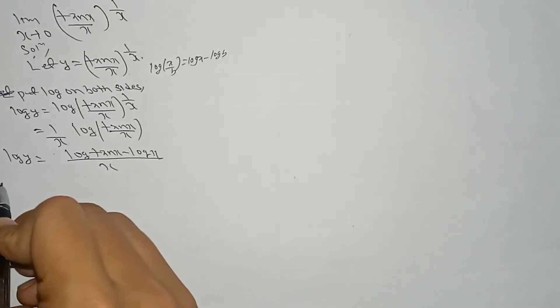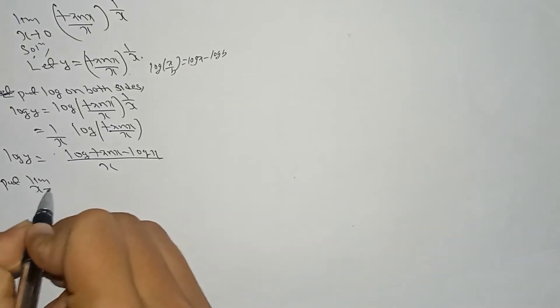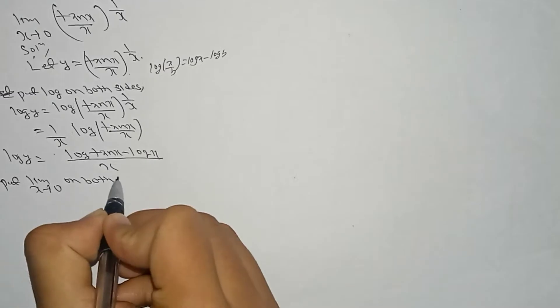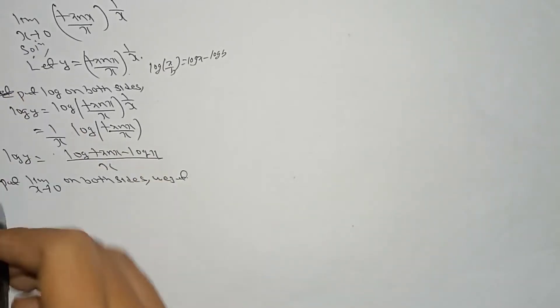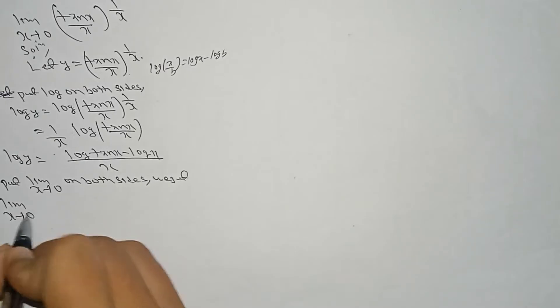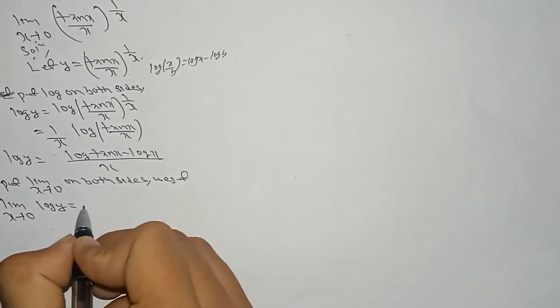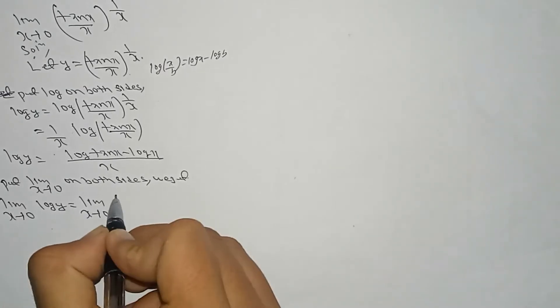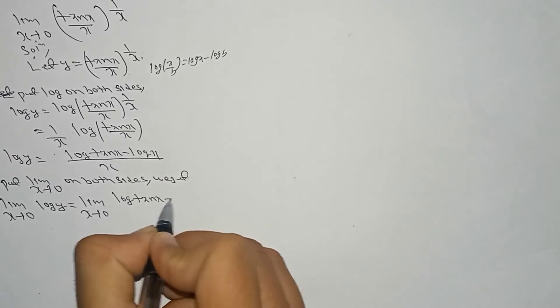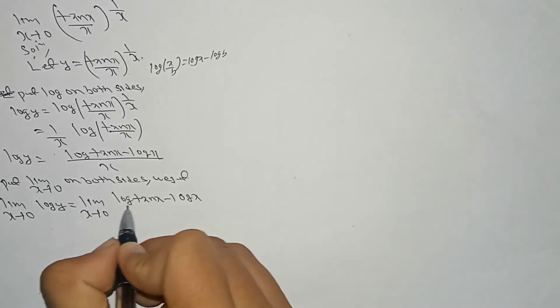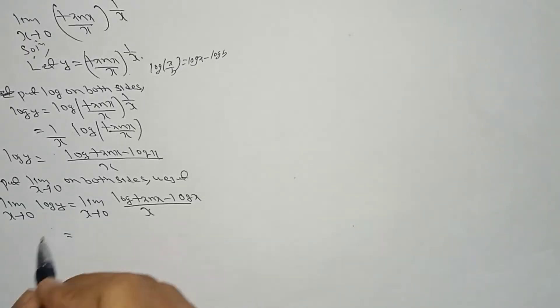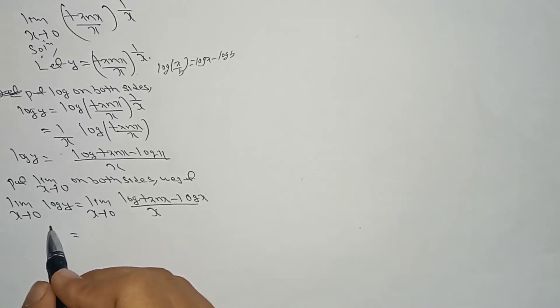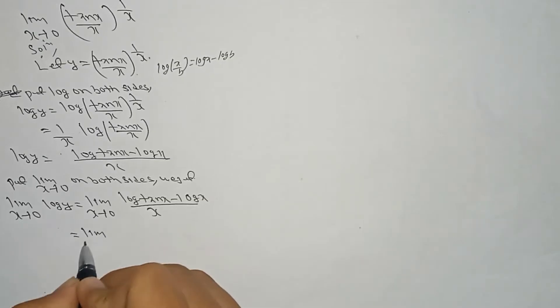So here we have log y. Put limit x tends to 0 on both sides. We get: limit x tends to 0 of log y equals limit x tends to 0 of (log tan x minus log x) / x. Now leave the left-hand side as it is and perform the right-hand side.